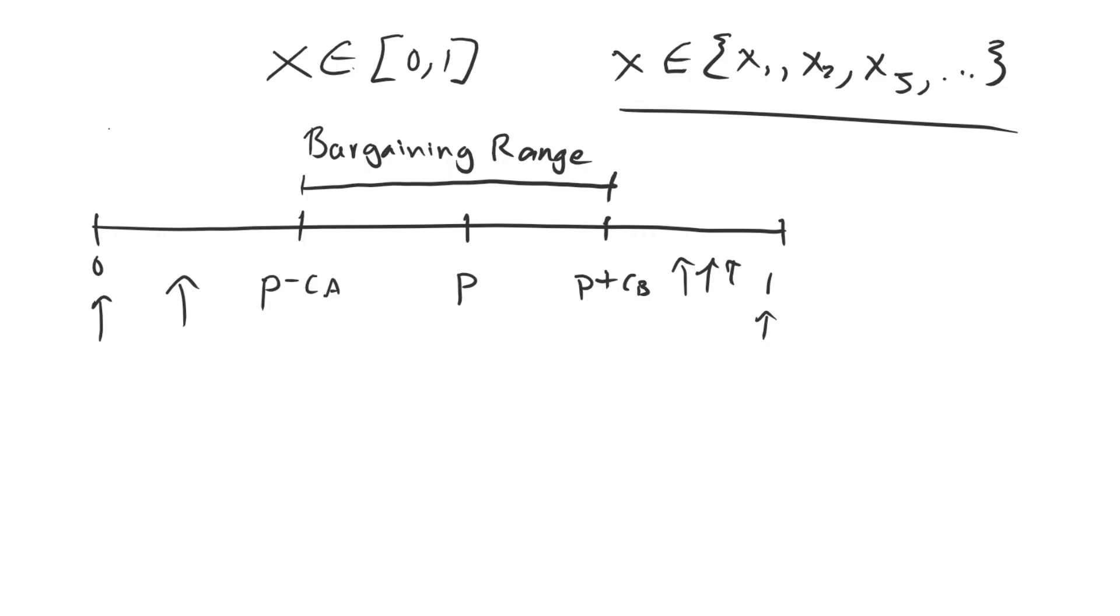In fact, you can have tons and tons of available settlements, and if none of them are falling in the bargaining range, then we're still in trouble. We still can't get a settlement to work. If you have a divisible object that is not something that you can infinitely divide, there's just a fixed number of divisions available to you. Unless at least one of them is falling in the bargaining range, then we're in trouble. We're going to get war.